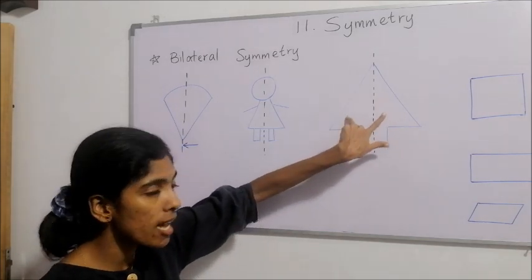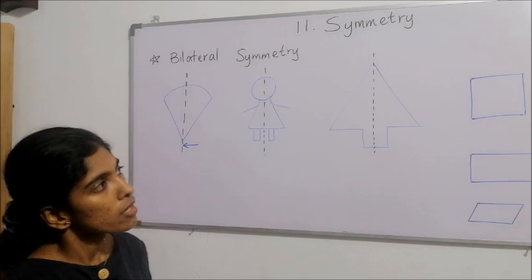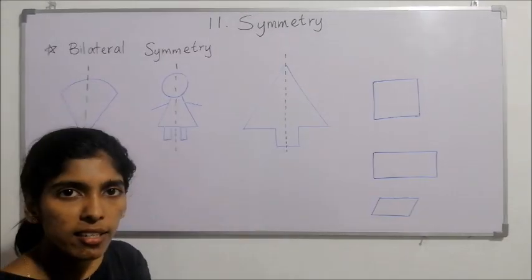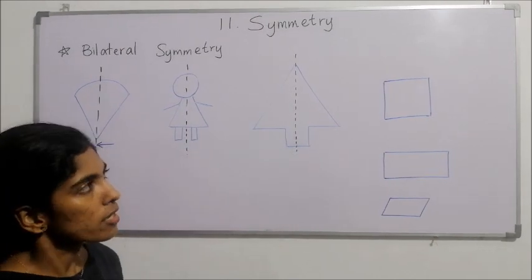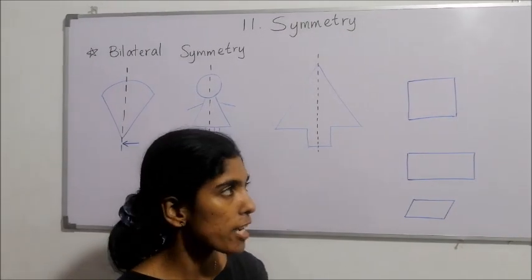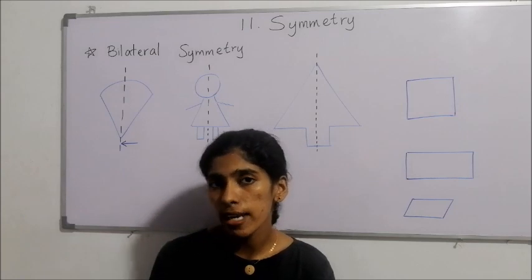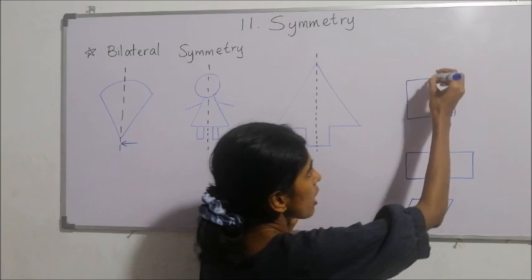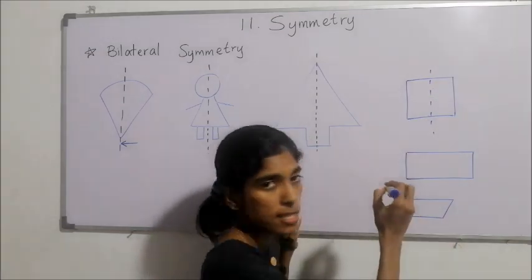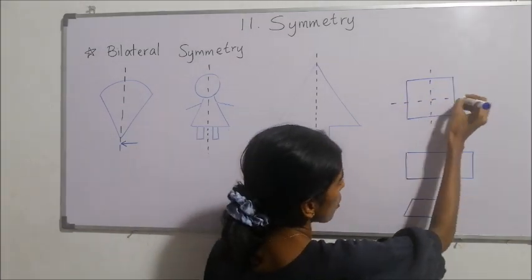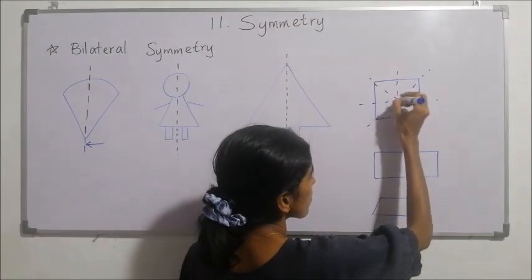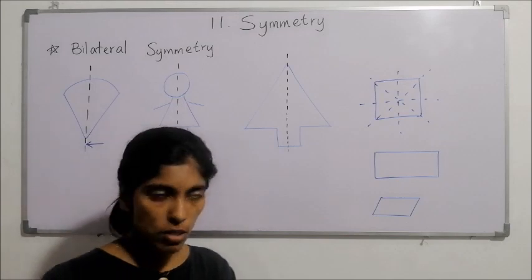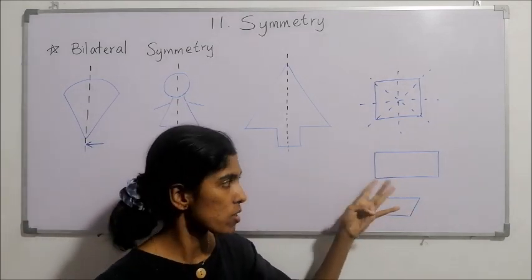There are plane figures which have more than one axis of symmetry. Look at this square — we can draw a vertical axis of symmetry, a horizontal one, and two slant lines can also be drawn. All these lines are axes of symmetry, so the square has four axes of symmetry.